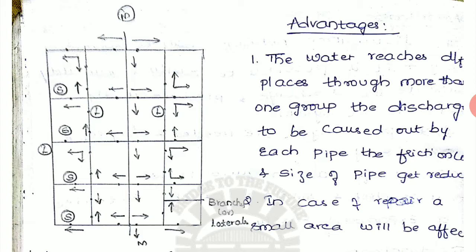And the third one is, because of interconnection, dead ends are completely eliminated. There is no dead end. To eliminate the tail end point, this type of system will be adopted. Water remains in continuous circulation and hence, not liable to pollution due to stagnation. There is no water stagnation. There will not be any water stagnation in the pipe. Hence, we cannot expect water pollution in this system.